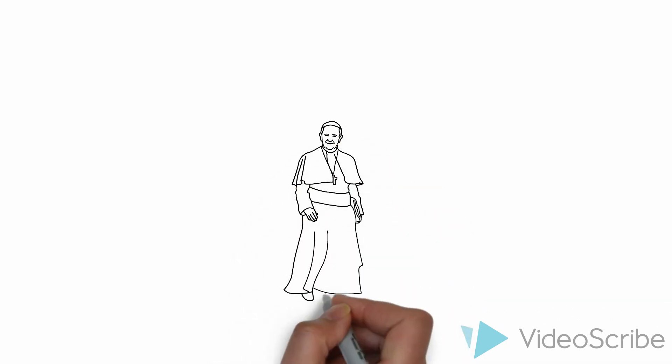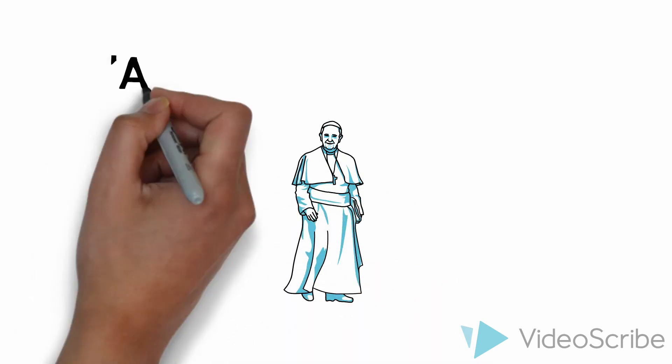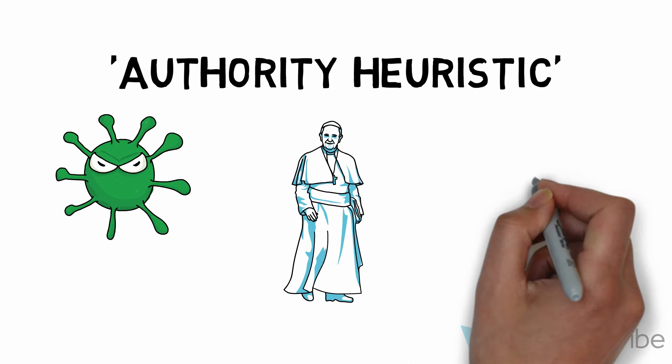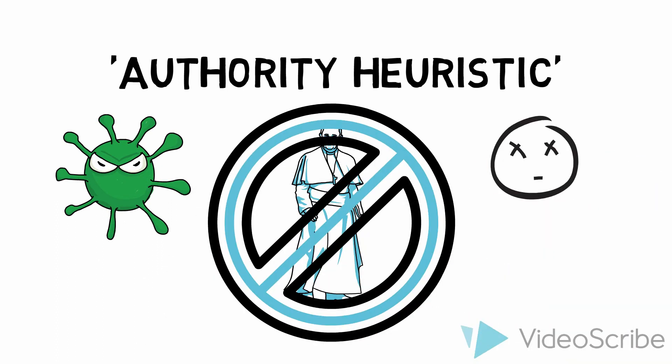Authority heuristics occur when someone believes in the opinion of a person of authority, such as religious leaders. Blindly trusting such figures could be dangerous and cause the expansion of infection or result in individuals applying lethal treatments.